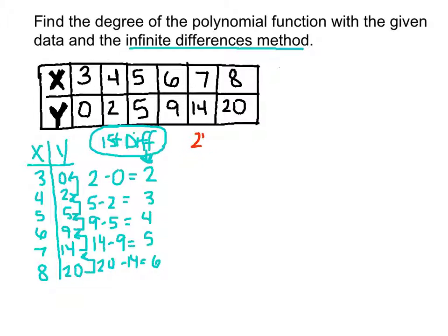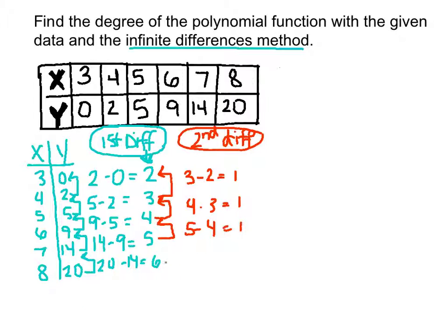We'll do the second difference. We take 3 minus 2, which gives us 1. 4 minus 3 gives us 1. We're off to a good start. 5 minus 4 is 1, and 6 minus 5 is 1.